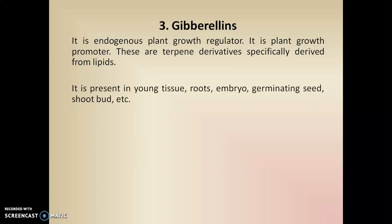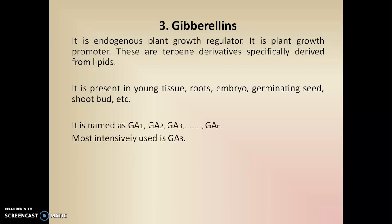Gibberellin is commonly found in growing parts such as young tissues, roots, embryos, germinating seeds, and shoot buds. It is generally named as GA1, GA2, GA3, and so on. There are a number of these gibberellins or gibberellic acids.